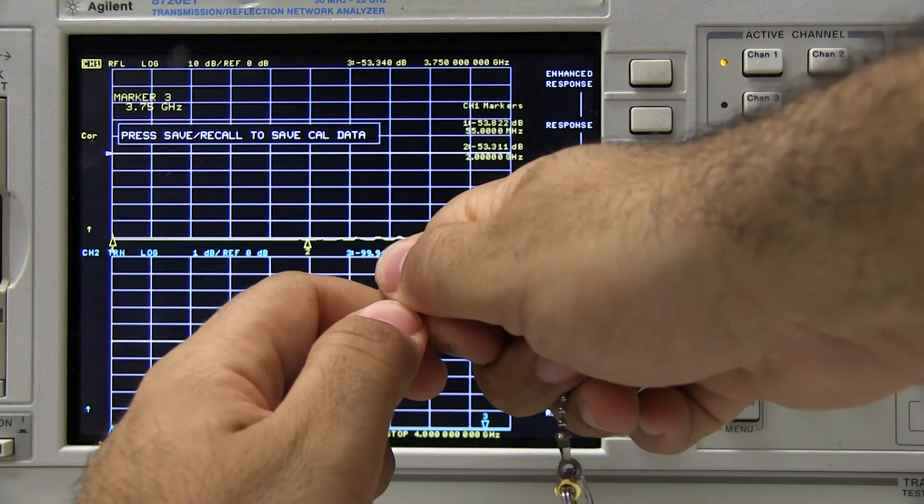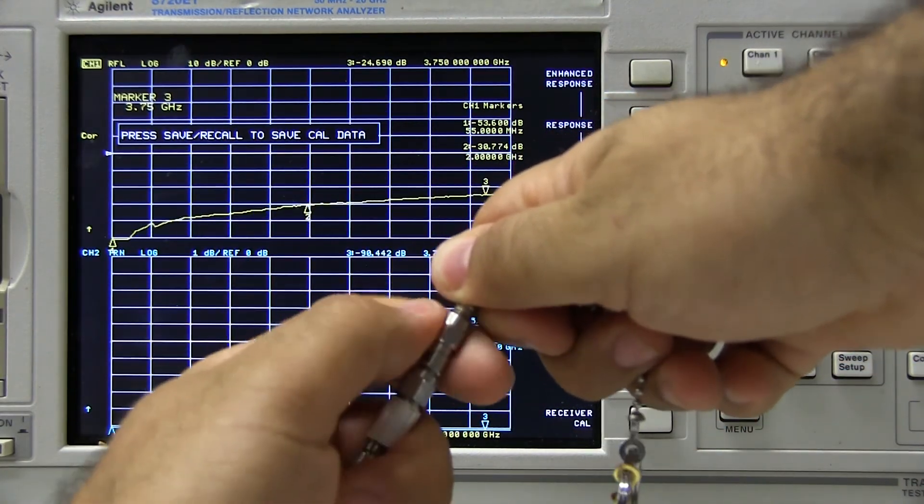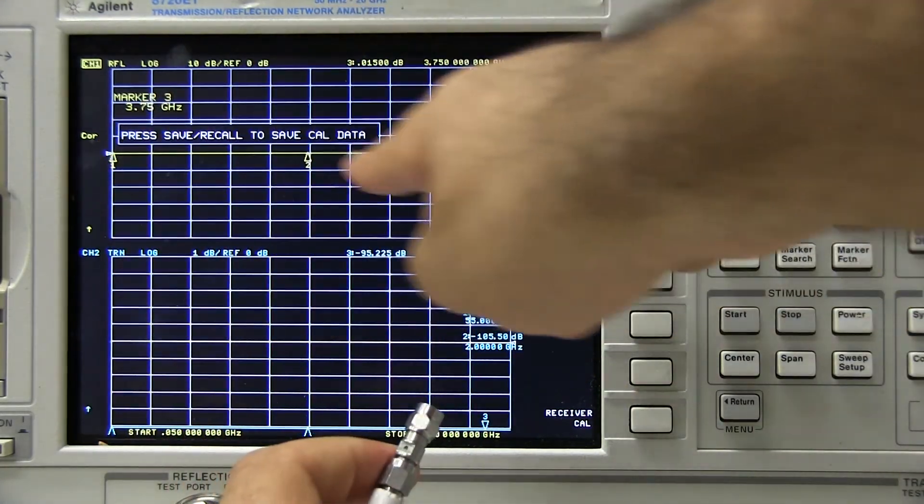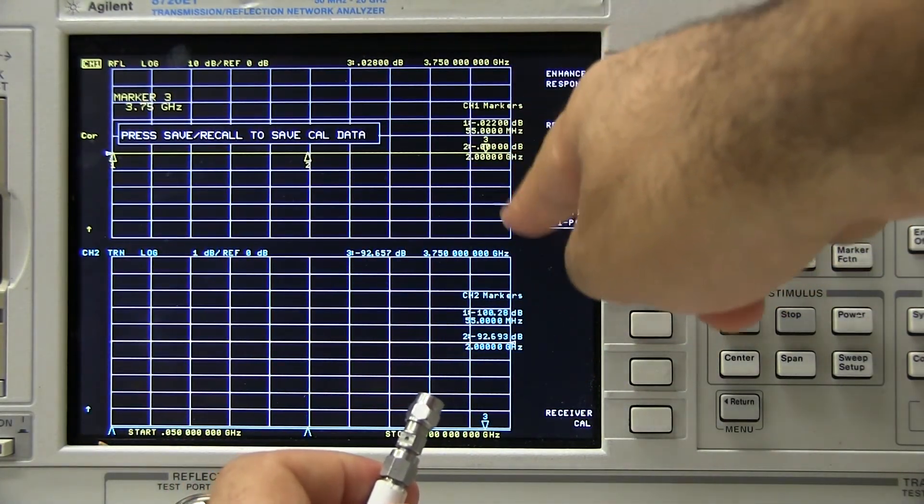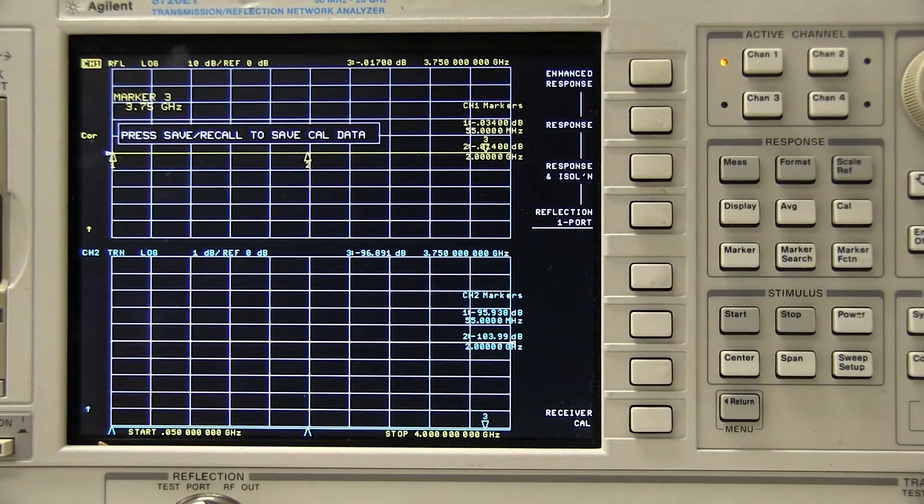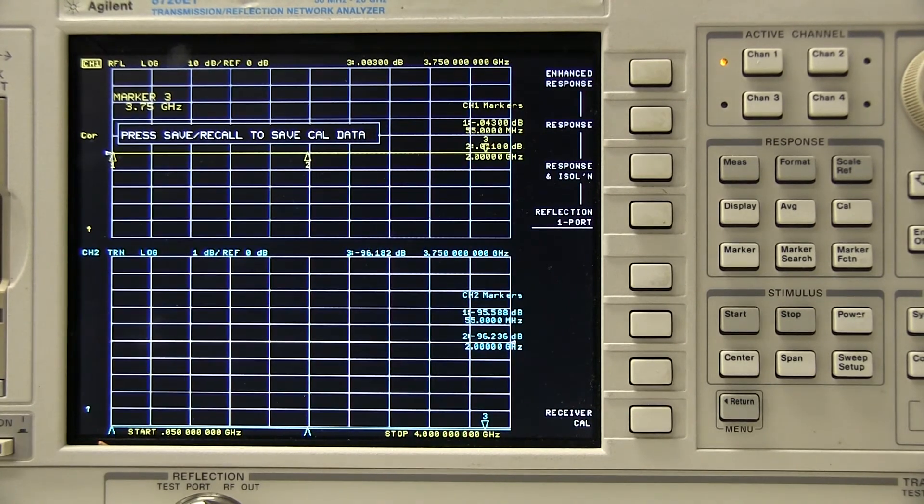And if you disconnect the 50 ohm load, and now we're running into an open, you'll see our return loss is basically zero. It's an open circuit.